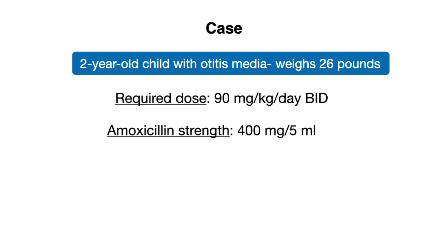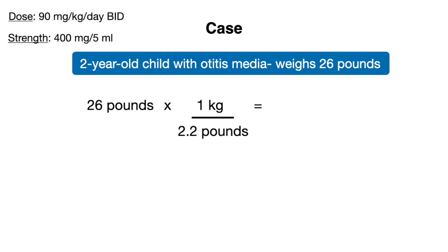We're given the weight in pounds, so first we need to convert to kilograms. It's important to know that 1 kilogram equals 2.2 pounds. So 26 pounds divided by 2.2 gives us a weight of 11.8 kilograms.